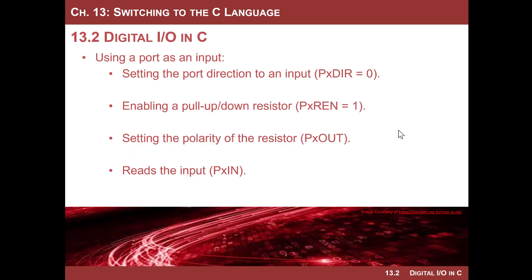So remember when we use any port we need to do a bunch of configuration in order to make that port set up the way that we want. The things we typically do are we've got to set the direction register. Remember an input requires the direction register bit to be zero. Since on our launchpad board we have single pole single throw switches, we need a pull-up resistor. We enable the on-chip resistors by setting a one in the resistor enable configuration register corresponding to the bit we're using. And then we also have to set the polarity of the resistor using the secondary function of the POUT register. And then finally we can simply read from the input register.